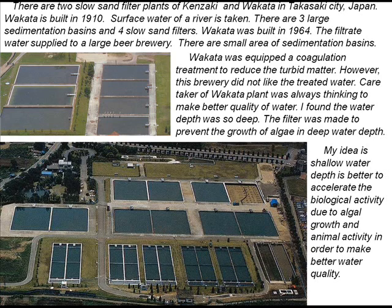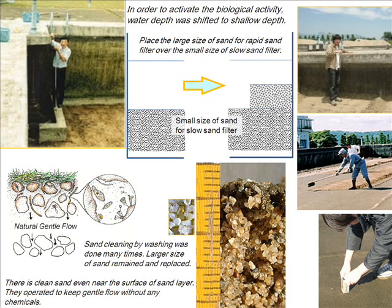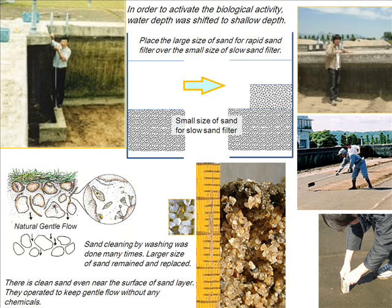My idea is that shallow water depth is better to accelerate biological activity due to algal growth and animal activity, in order to make better water quality. In order to activate the biological activity, water depth was shifted to shallow depth. When the total depth of the sand layer became large, filter resistance might be larger than the ordinary sand layer. In order to reduce the effect of filter resistance, large sizes of rapid sand filter were placed over the sand bed.